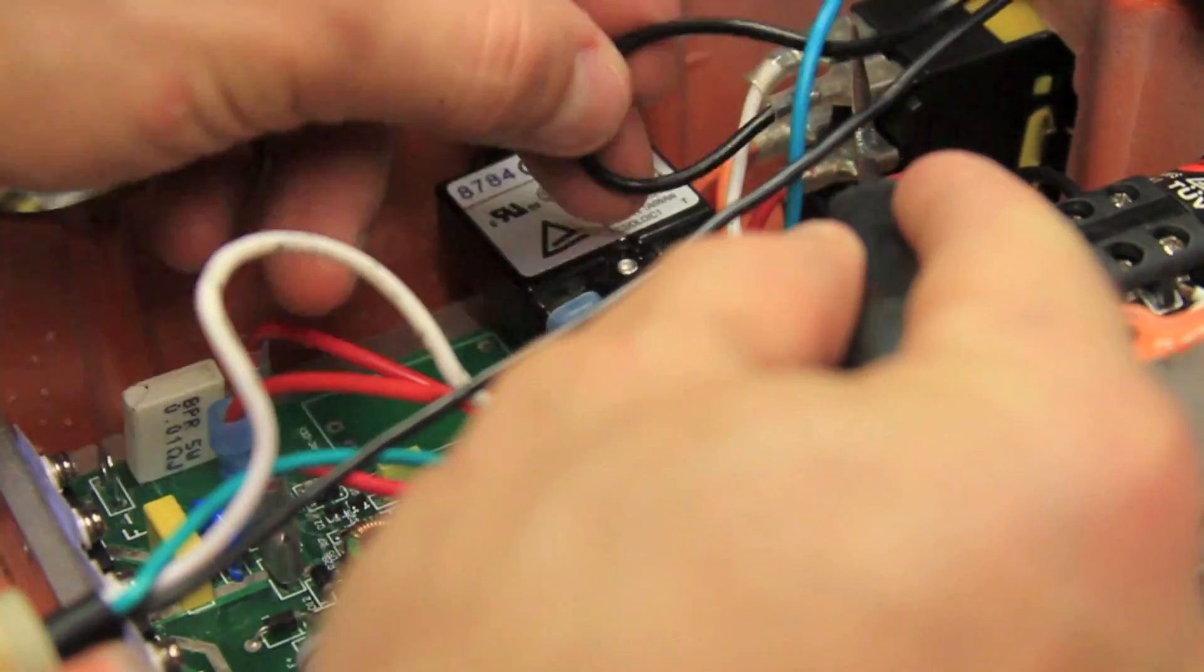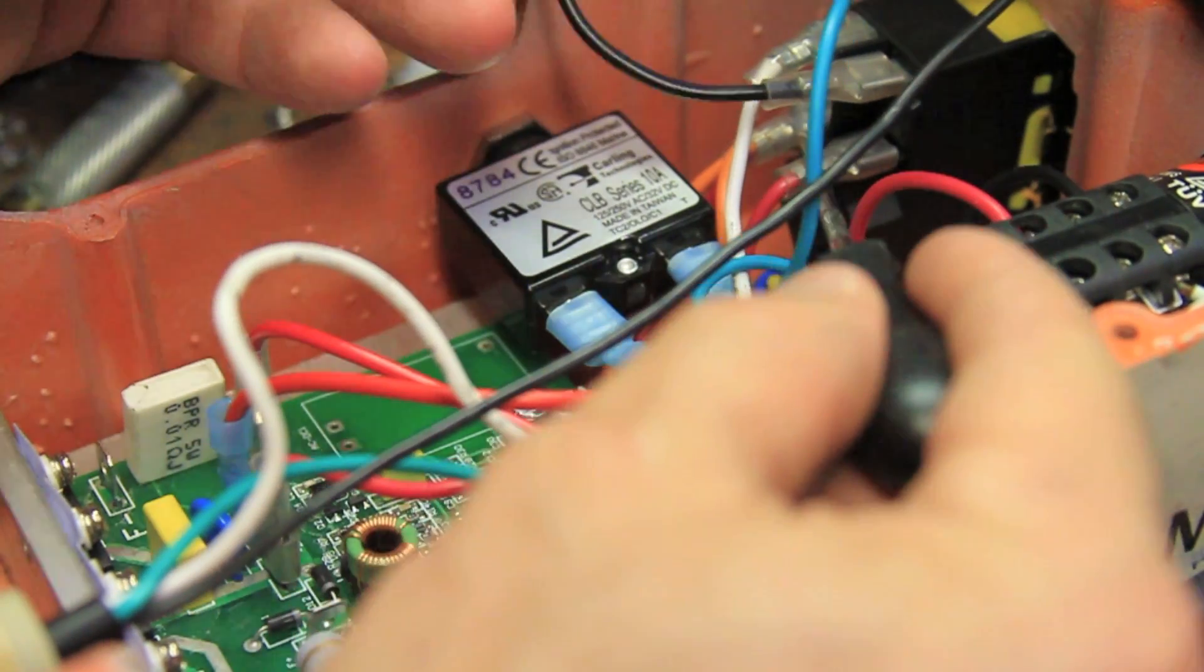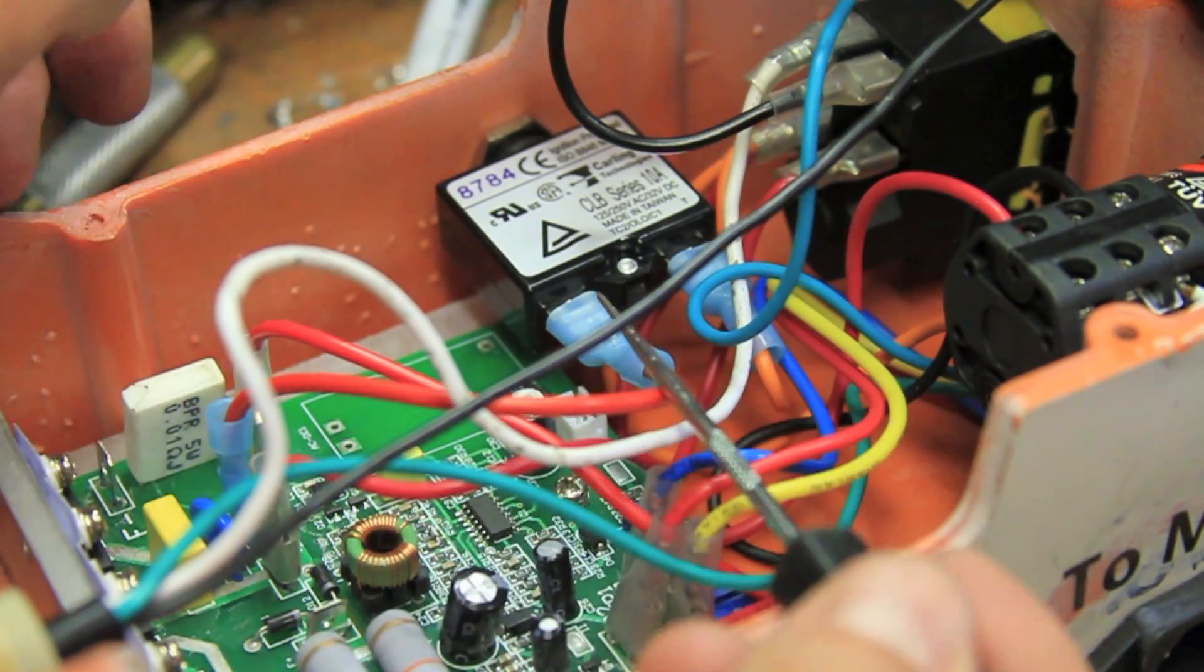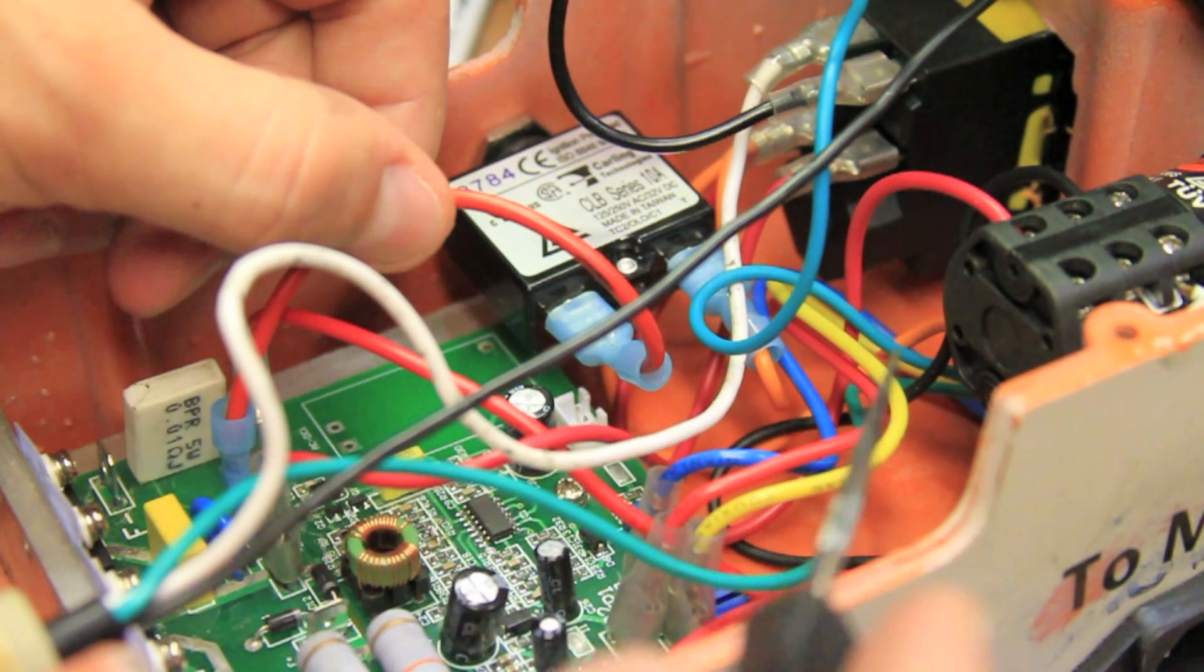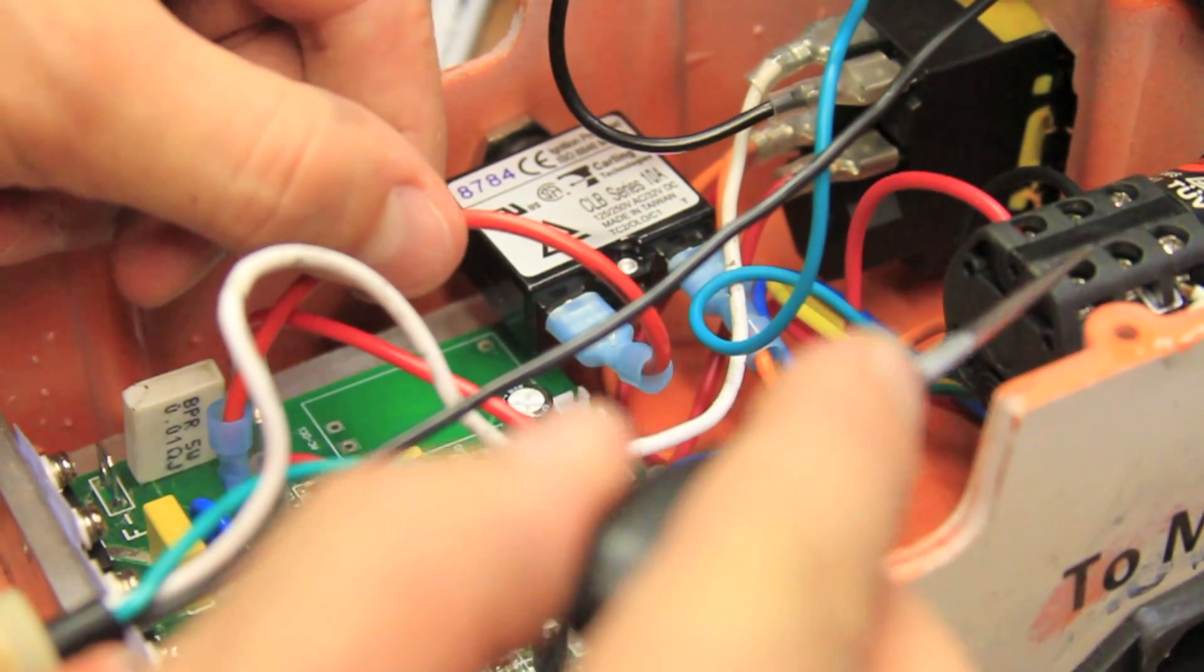Also, notice how the AC power from the wall comes into the on-off switch and then into the circuit breaker, and it isn't until it passes through the controller board that it is converted to DC power for the motor.